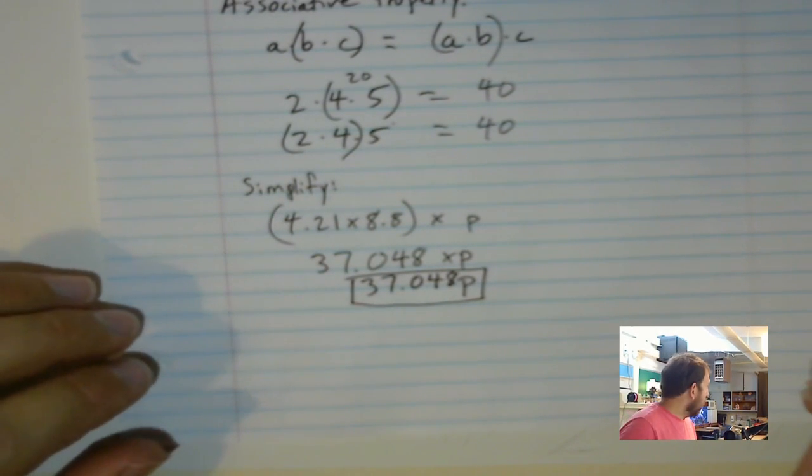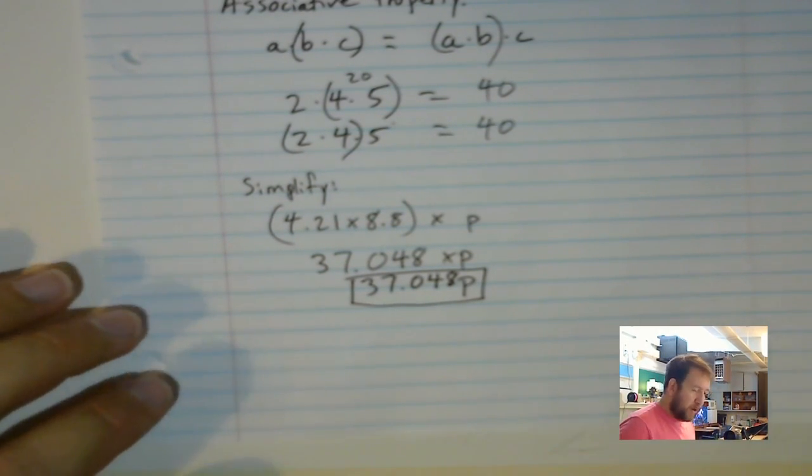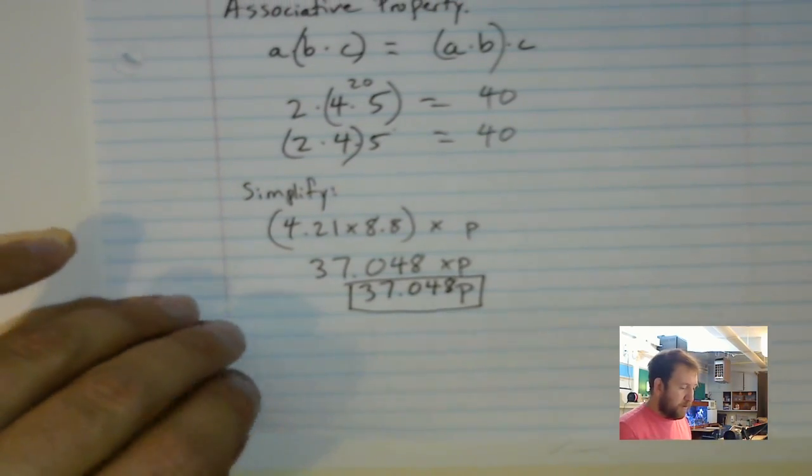That's how I can simplify. I want to take a look at one more example quick before I send you off. This one's a little bit more complicated, and it's what's useful in using these associative and commutative properties. Okay, we're going to take a look at an example with some cooking.